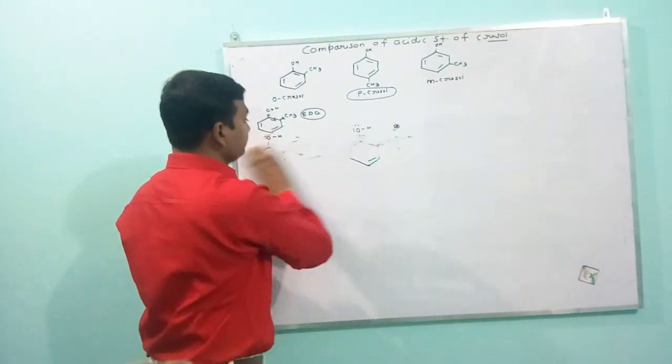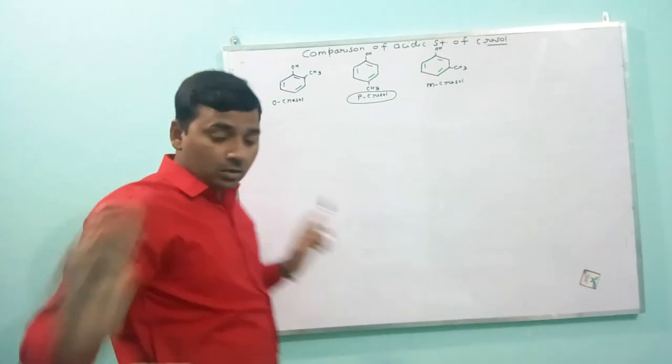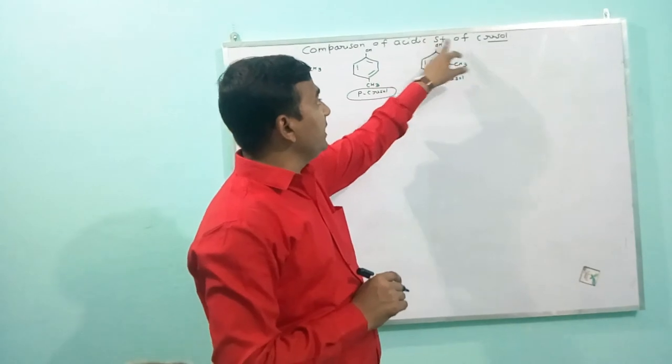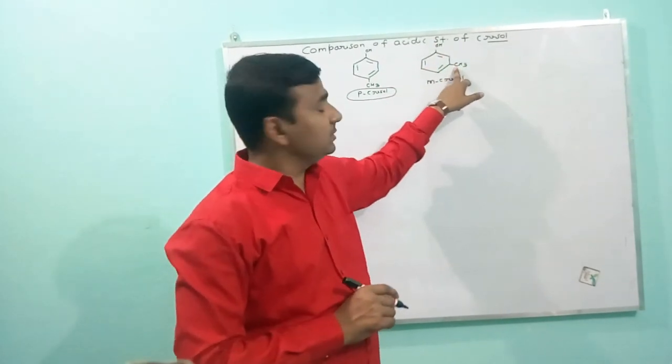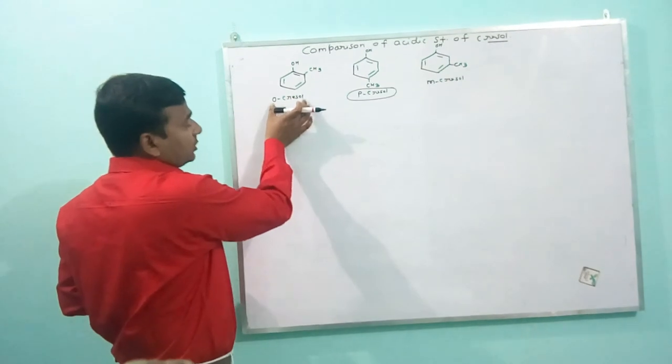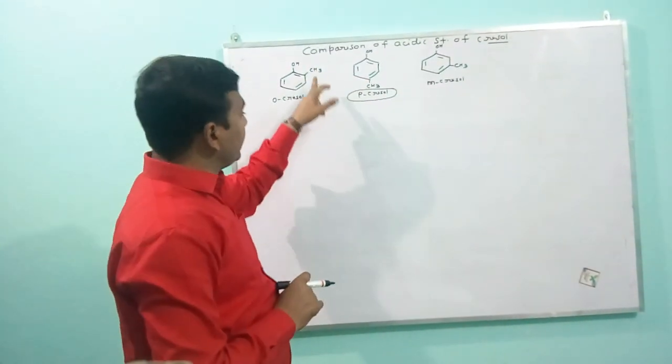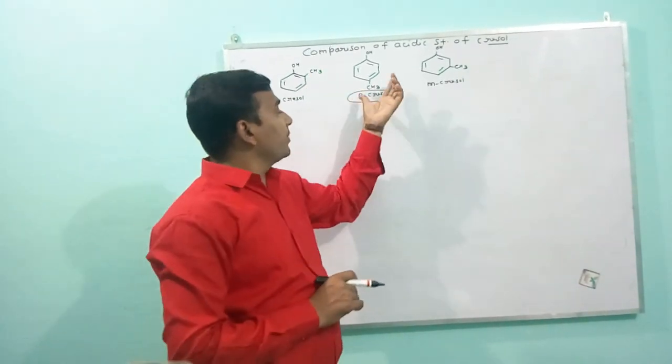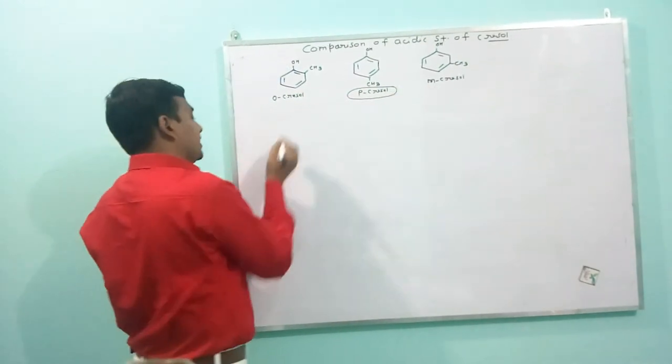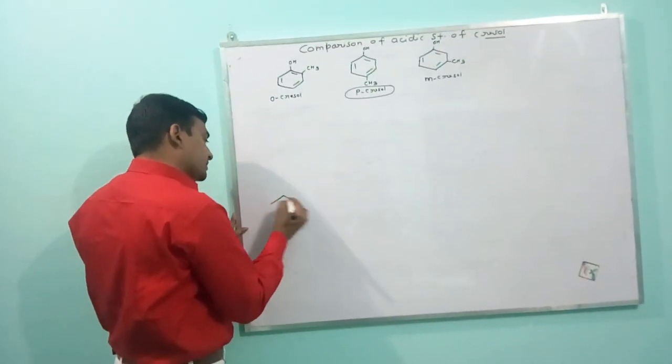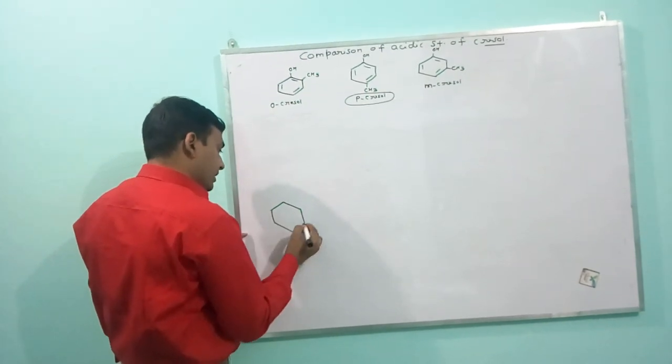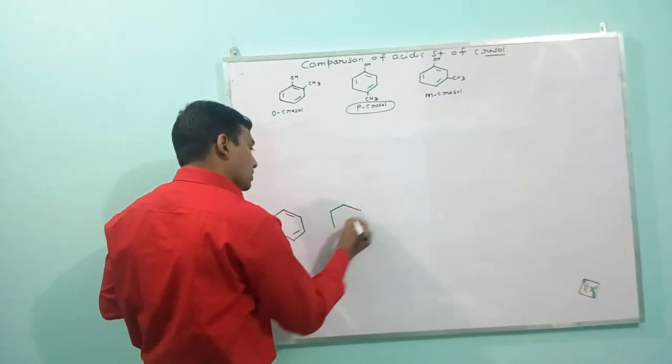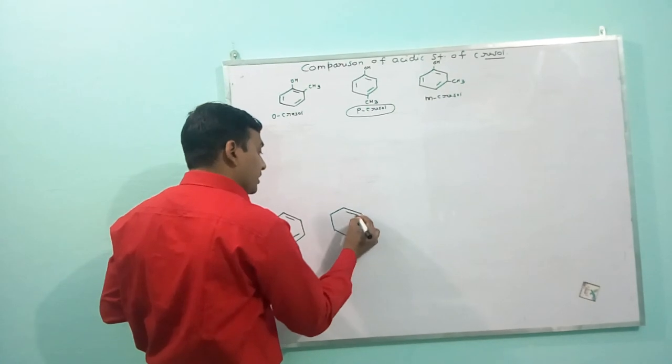In nutshell, we can say that in meta cresol, electron density increases between O and H only through the plus-I effect and also through the hyperconjugation effect. Hence, meta cresol will be more acidic than ortho and para cresol. And you know, all cresols are less acidic than phenol.